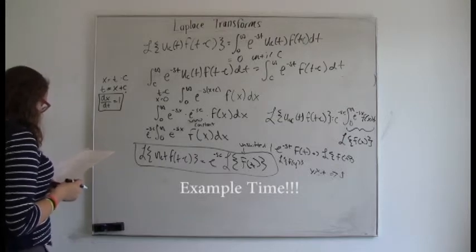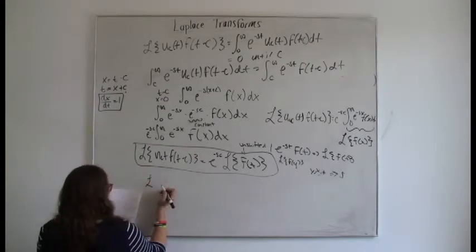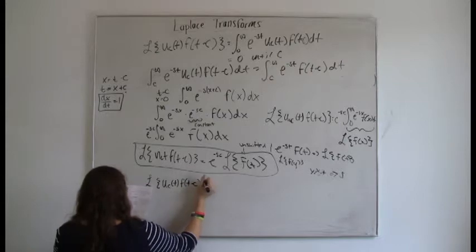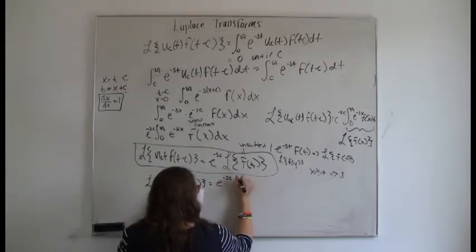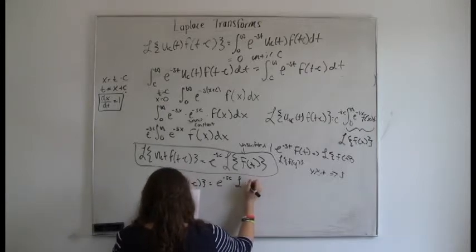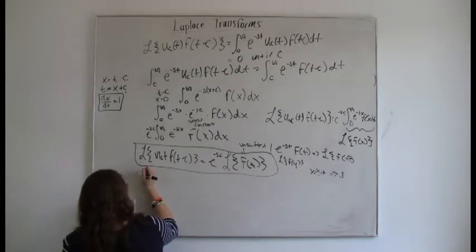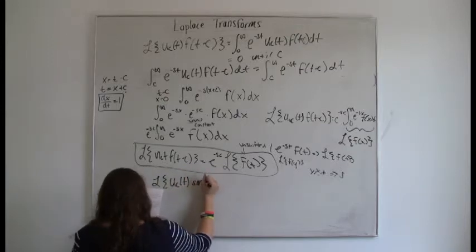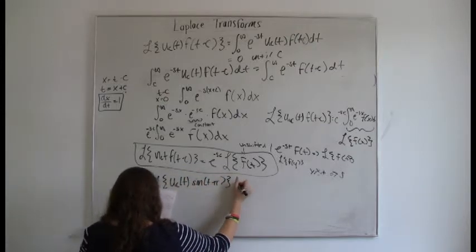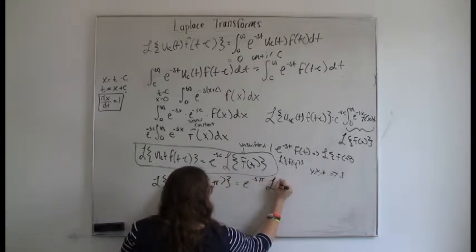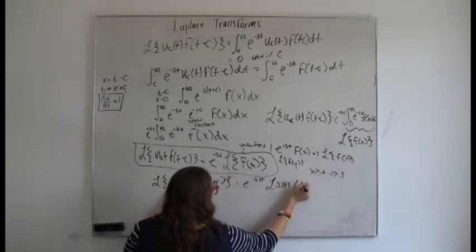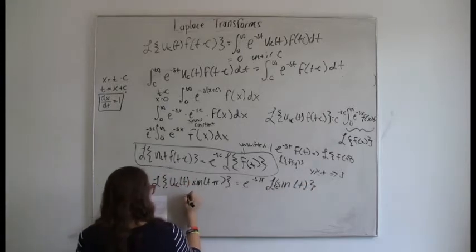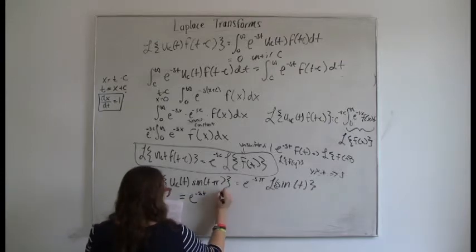Let's do a quick example. We want the Laplace transform of u_π(t) times sine of (t minus π). Using our formula, c is π, so we have e to the minus s·π times the Laplace transform of the unshifted function, which is just sine of t. The Laplace transform of sine of t is 1 over s squared plus 1.